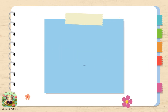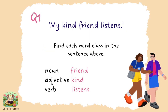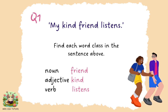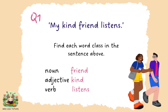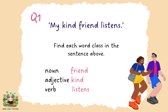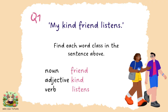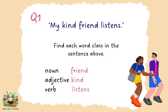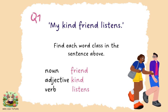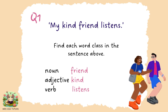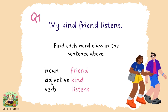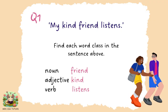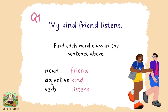Round two answers for question one. A noun is a person, place or thing — and in this sentence, it's 'friend'. An adjective is a word that describes a noun. My friend is kind, so 'kind' is the adjective. And the verb is what the noun is doing — in this case, the friend is listening, so the verb is 'listens'.